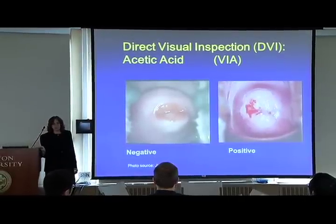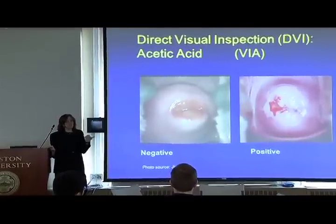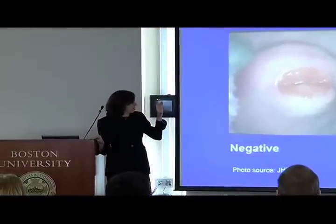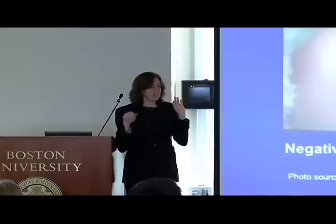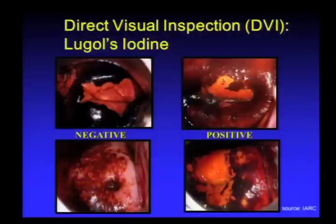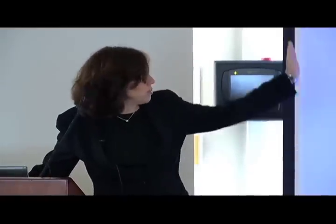To address this, a simpler technology has been developed called visual inspection with acetic acid, or VIA. This is typically done by nurses or low-level medical providers in the developing world. Using a clean speculum, the provider puts white vinegar on the cervix, uses a flashlight, and looks for anything abnormal. If aceto-whitening is seen, that's a positive test and the patient is further treated. Visual inspection with iodine is another approach—some consider it more sensitive—but both do much the same thing.